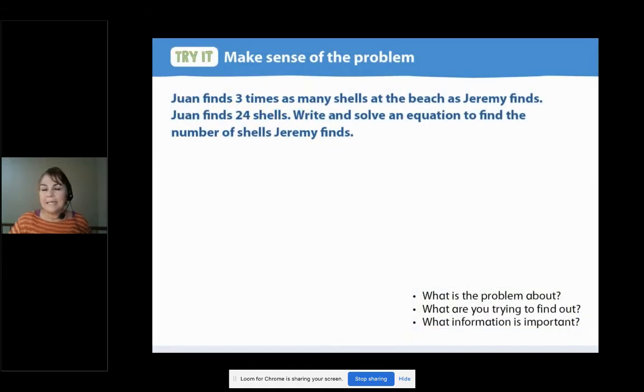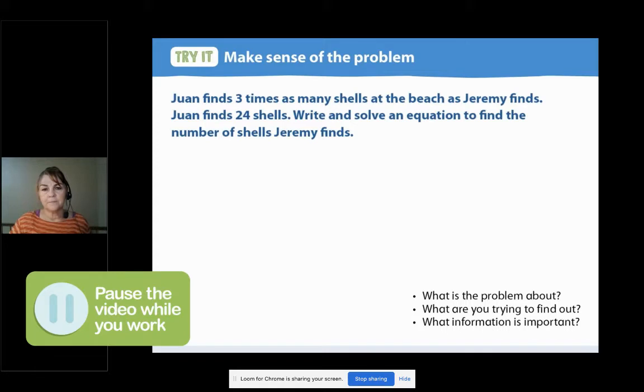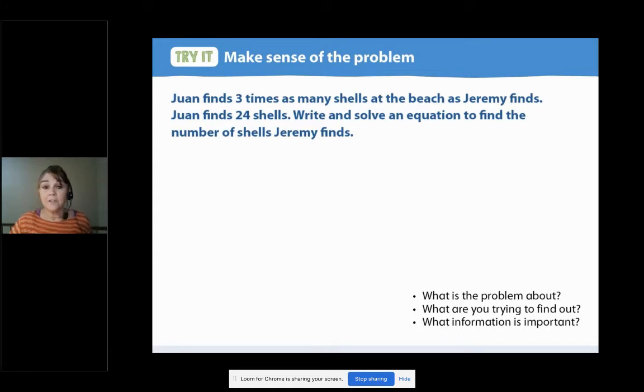All right, we're going to start by making sense of the problem. So I'm going to read and you follow along. Juan finds three times as many shells at the beach as Jeremy finds. Juan finds 24 shells. Write and solve an equation to find the number of shells Jeremy finds. Go ahead and pause and write down what you think this problem is about. Well, I thought it sounded like the problem was about seashells. How about you?